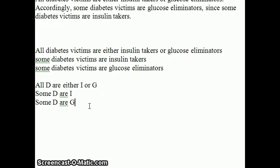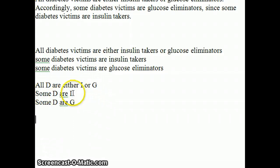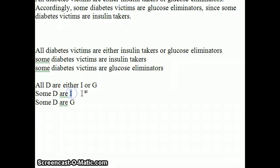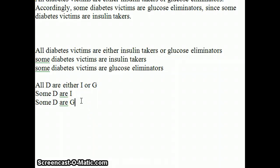Now that I have the form, I'm trying to show this is invalid by showing that the two premises can be true and yield a false conclusion. I want to find something where it's true that all of them are one thing or another, it's true that some of them are this, but it's false that some of them are this other thing. If it's false that any of them are G, and it's true that some of them are I, and they all have to be either I or G, then they all have to be I. So I need to find something where all of them are I and none of them are G.